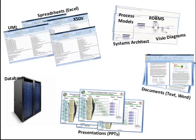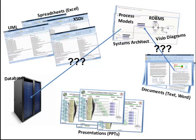In this current environment, it is very difficult to determine how policies, captured in Word documents, relate to business processes, captured in models, and how those business processes relate to data, captured in a database. Data needs to be represented in a format that allows these types of relationships to be discovered. Ontologies capture data in a way that allows these relationships to become visible.